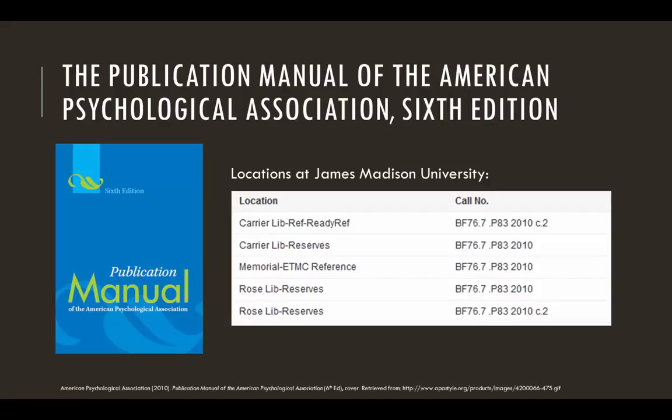The Publication Manual of the American Psychological Association is the authority on all things APA. It's updated periodically, and the most current version is the sixth edition. The manual is only available in hard copy, so if you're going to be writing in APA Style a lot, you may want to consider buying it. At the very least, go to the library and give it a good skim — that way you'll know where to find it and how to use it.